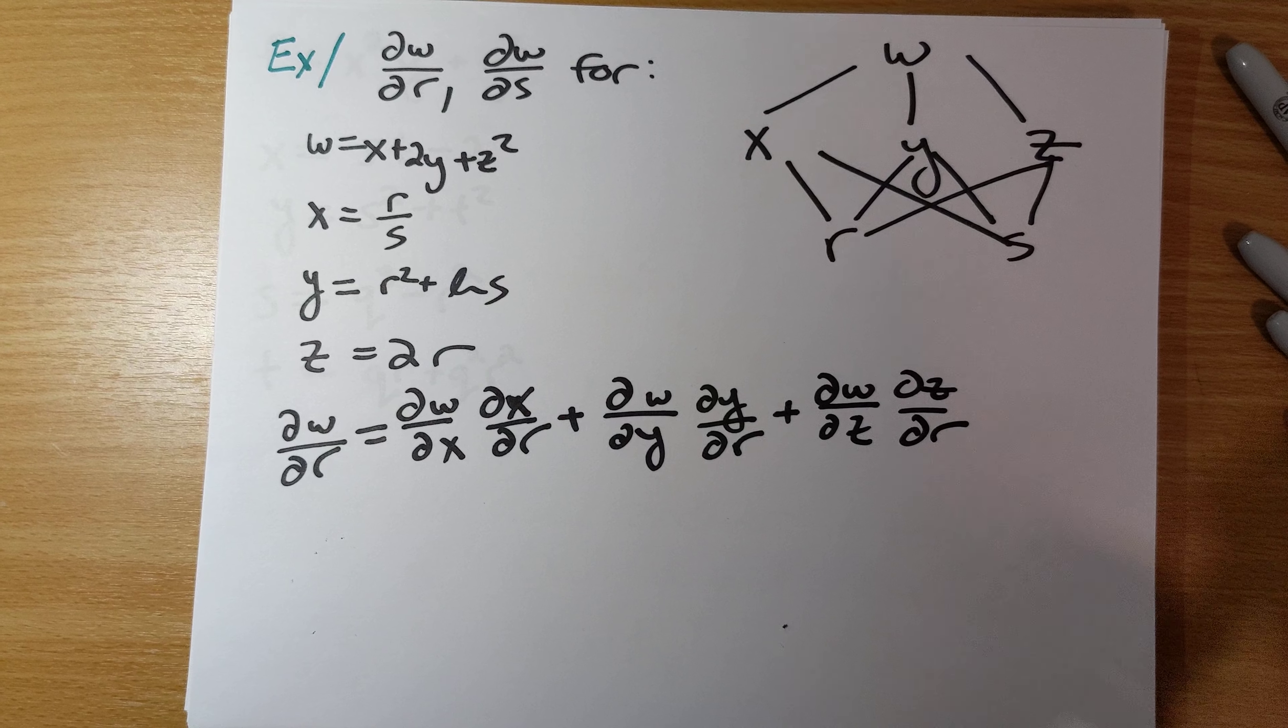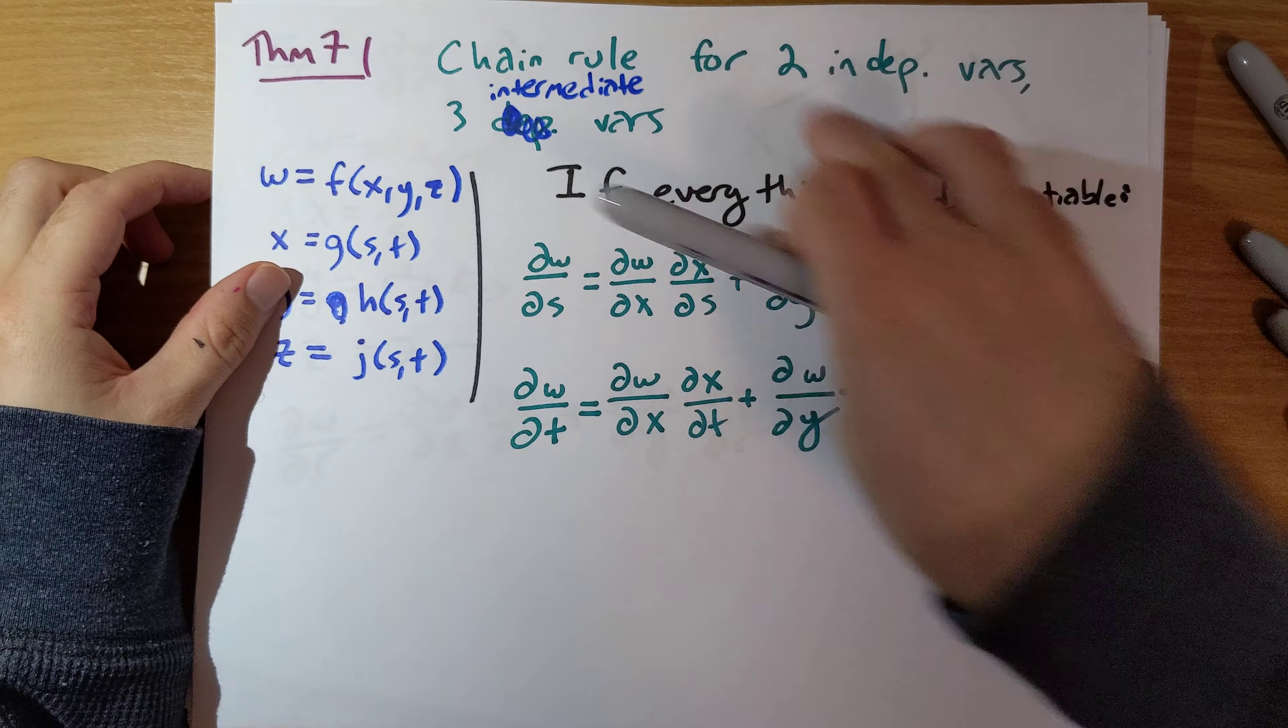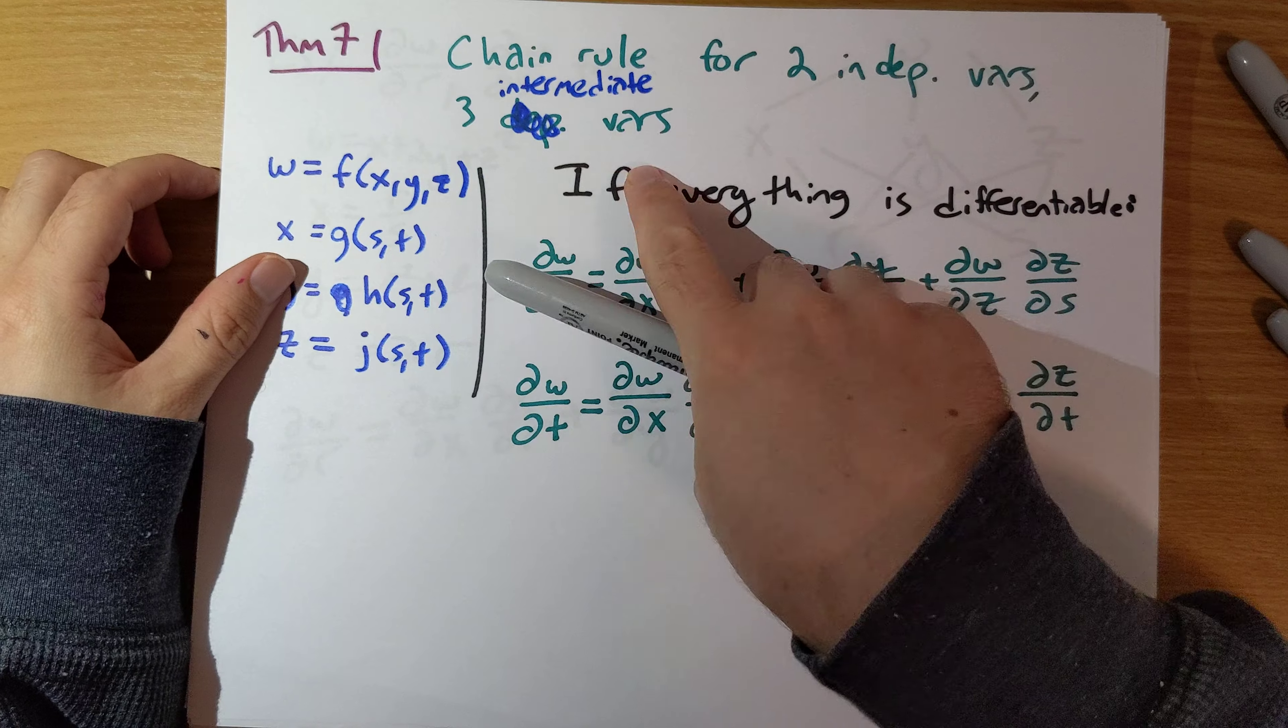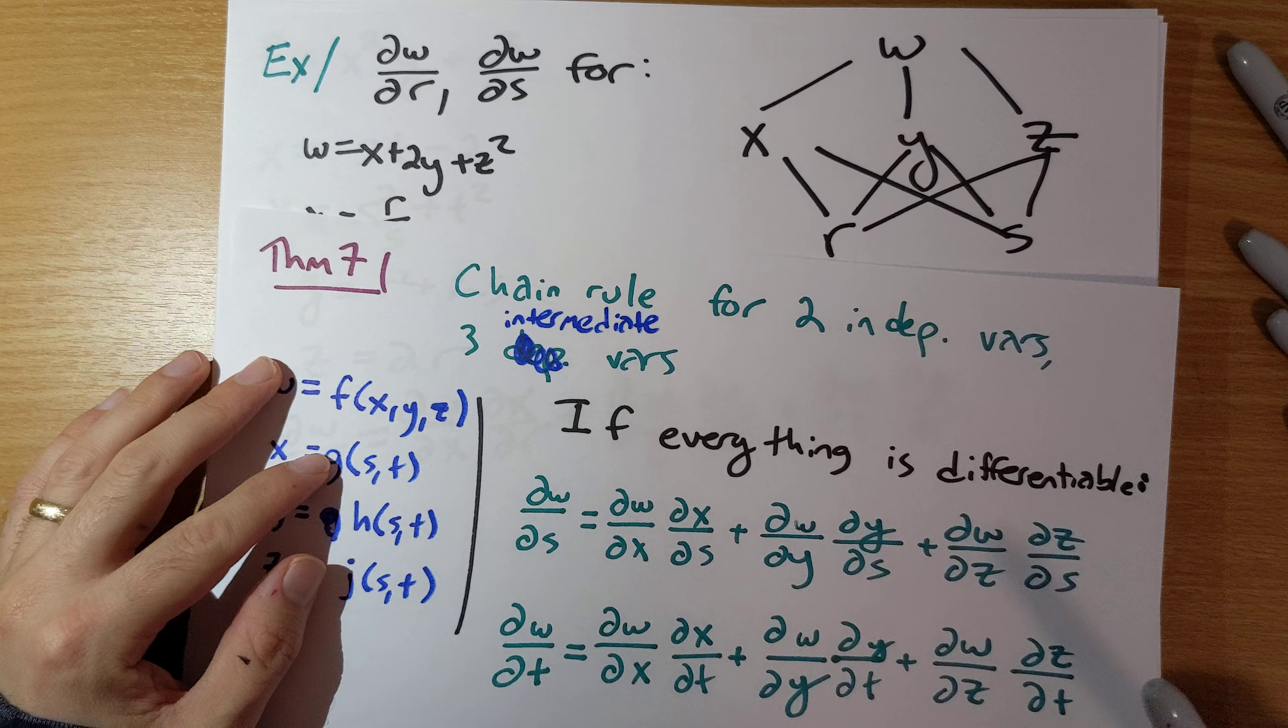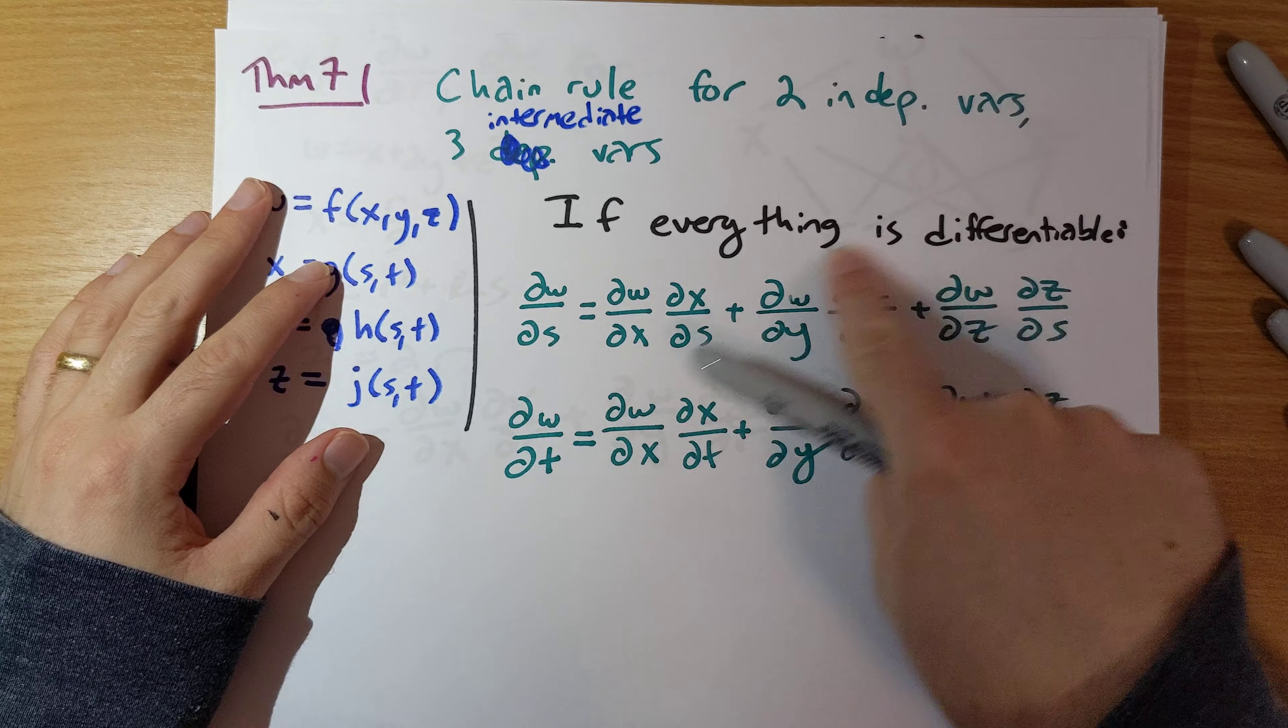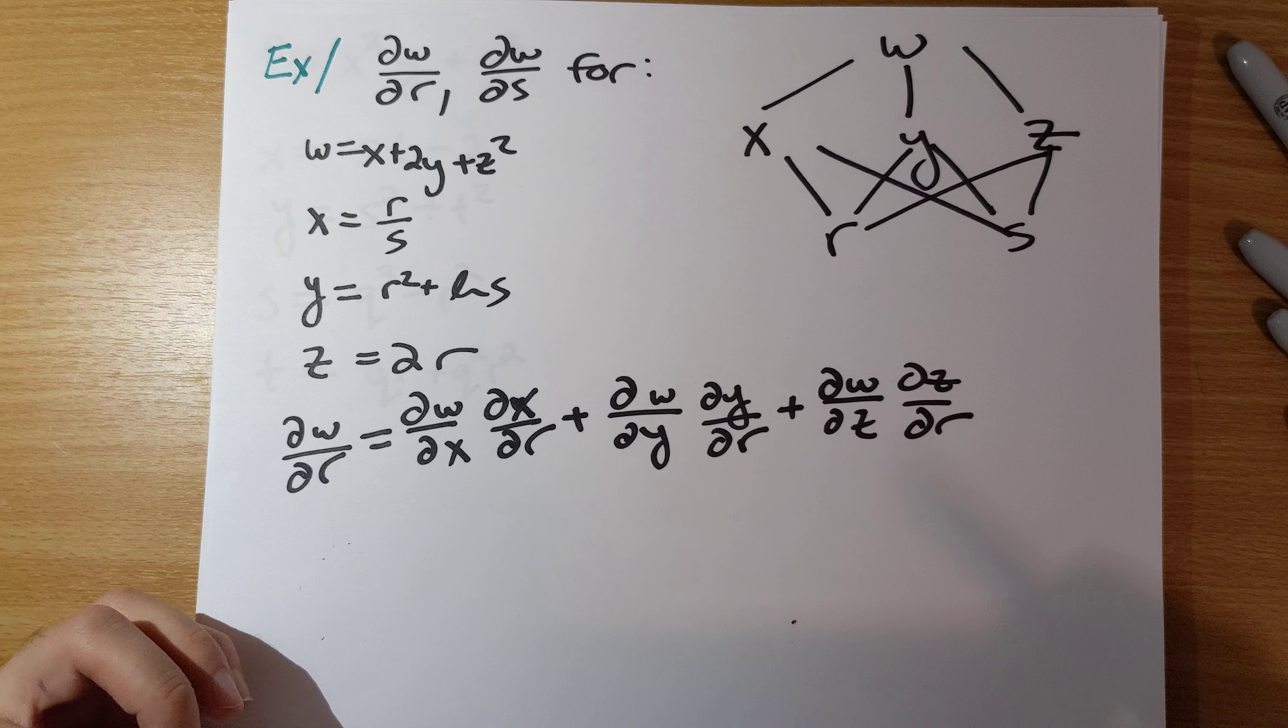And I should say here with this example, a couple videos ago I showed you this theorem here, the chain rule for two independent variables three intermediate variables. That's exactly what we have here, three intermediate and two independent variables, and this formula right here is equivalent to this after just changing r to t.